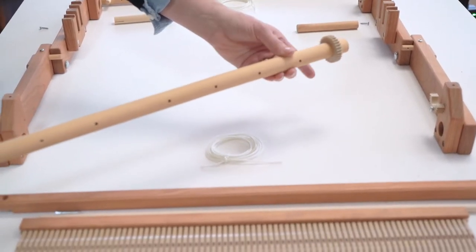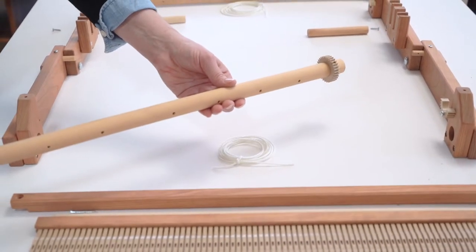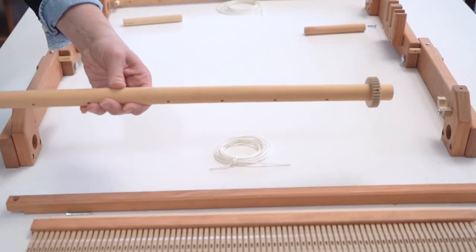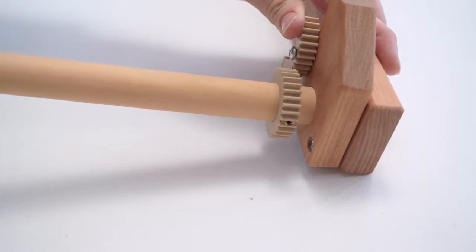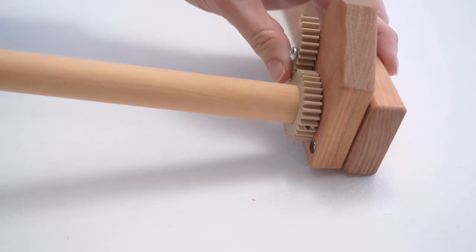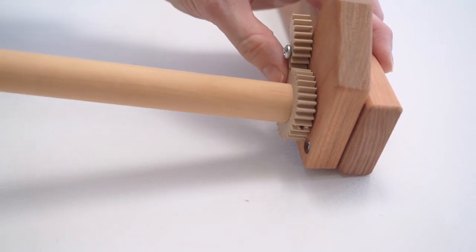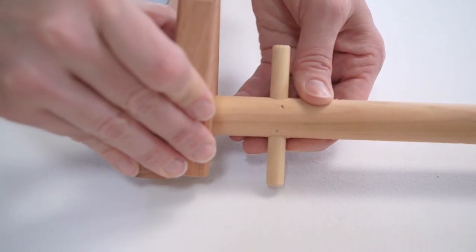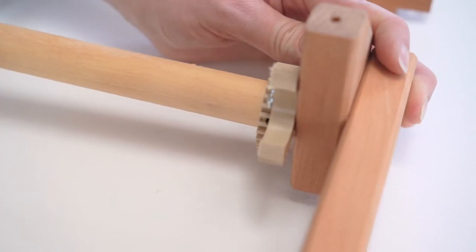The next step is inserting the front cloth beam and the back warp beam into these holes. The gear and the half moon piece on the same side goes in there and then you do the same on the back.